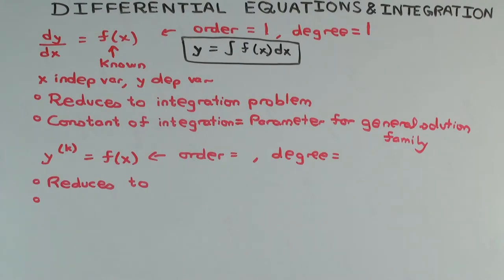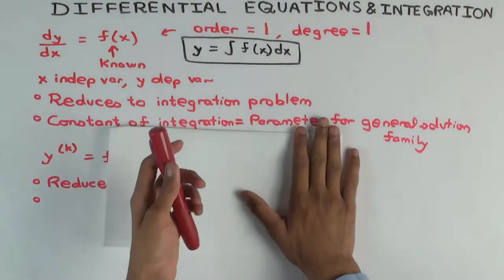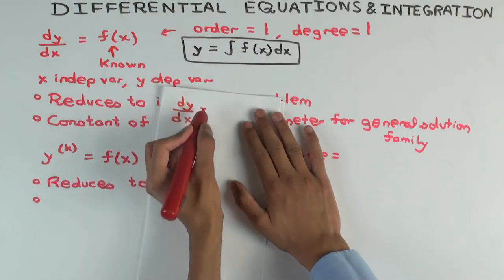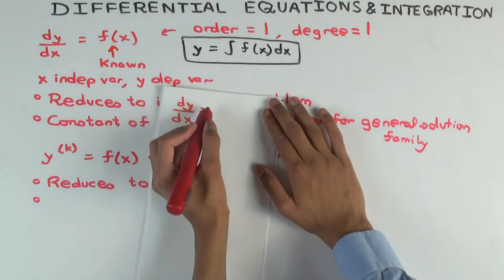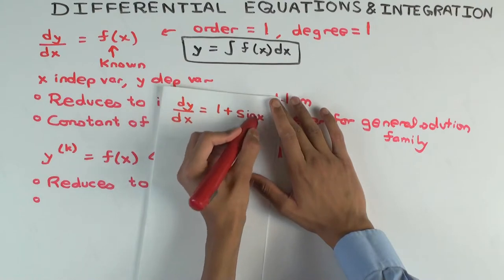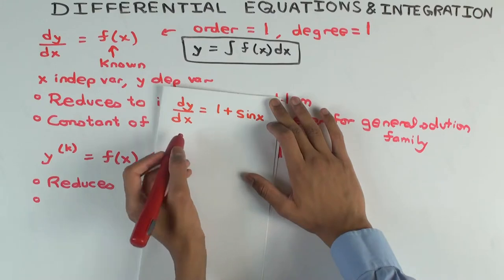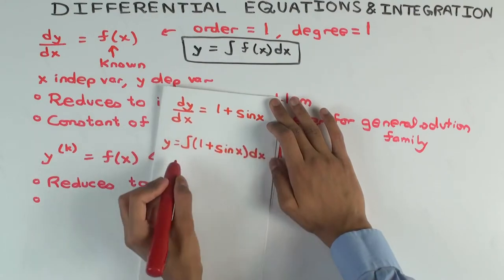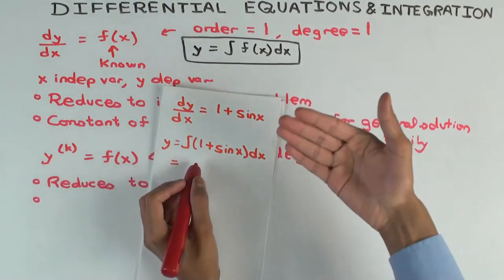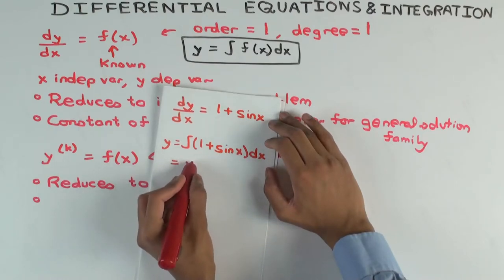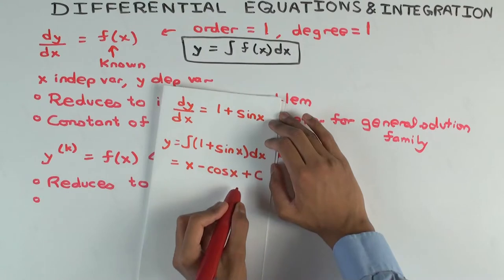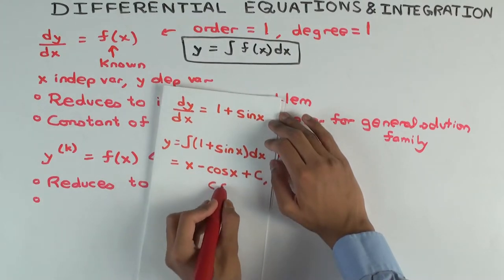Let me write out an actual example. Let's say dy/dx = 1 + sin(x), which means y is a function whose derivative with respect to x is 1 + sin(x). Then y is just the integral of 1 + sin(x) dx — that's the definition of indefinite integration. Integrating gives x minus cos(x) plus C, where C is any real number.